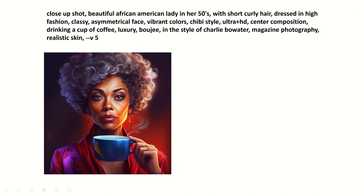Here we have one of the prompts I used, and you can see the words I used to generate this image. I think she looks amazing. Some of the things you see here is 'in the style of,' which you'll see a lot in MidJourney. If there's an artist whose work you like, you can say 'in the style of' and use the artist's name. You can put things like magazine photography, realistic skin to get better images. This V5 just stands for the versioning.